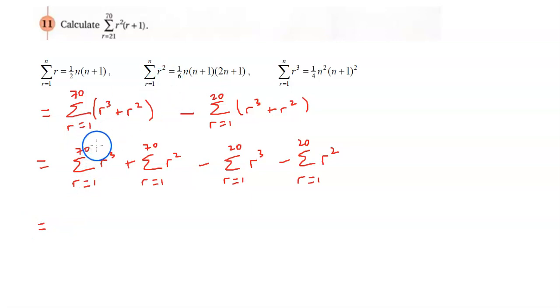So we're using the cubed formula and the squared formula and then we're just putting in n equals 70 and n equals 20 for each one.